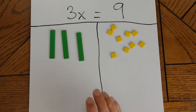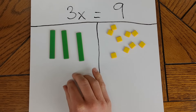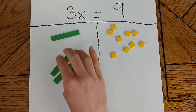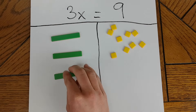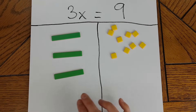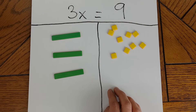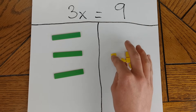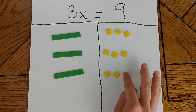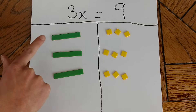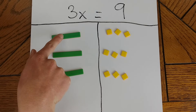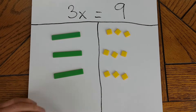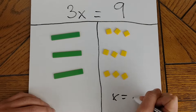My goal in solving equations is to get x on its own, so I'm going to take my side with the x tiles and divide it into three equal groups of 1x each. Now I know that whatever I do to one side of my equation, I must also do to the other side, so I'm going to come over to the unit tiles and divide them into three groups. Now I can see that each individual x is equivalent to a group of three unit tiles. In other words, x equals 3.